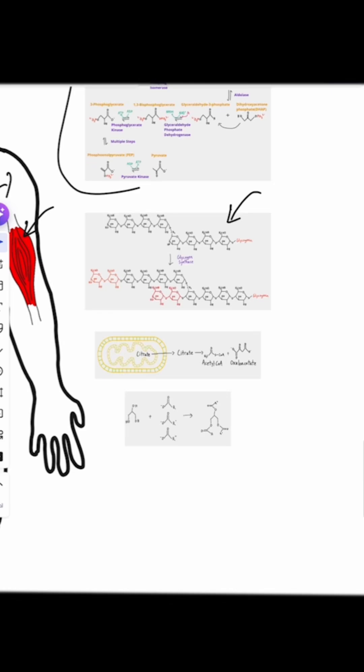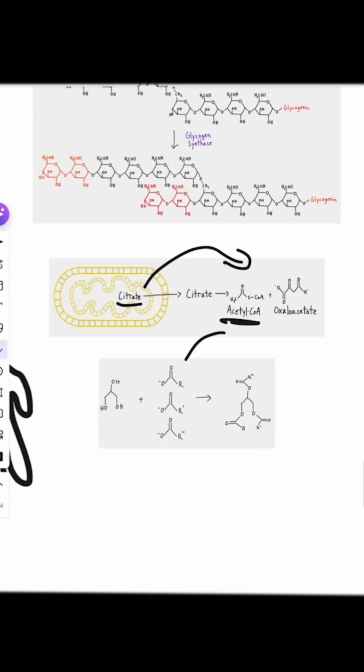It's going to be burning up a lot of sugar, and what that's going to do is basically overload the Krebs cycle. Some of the citrate in the Krebs cycle, long story short, it's going to get shuttled out and turned back into acetyl-CoA. The acetyl-CoA will go through fatty acid synthesis to create fatty acids.